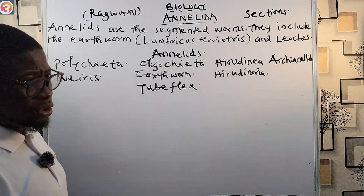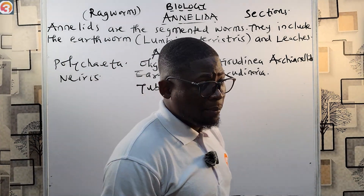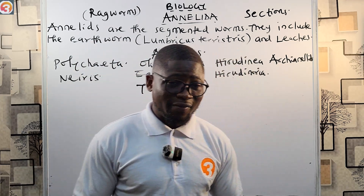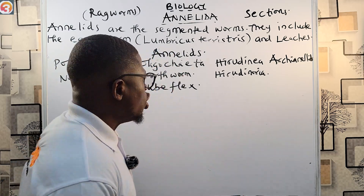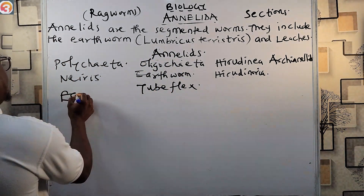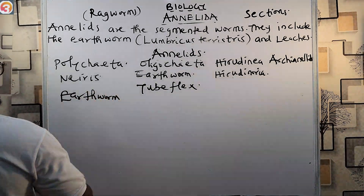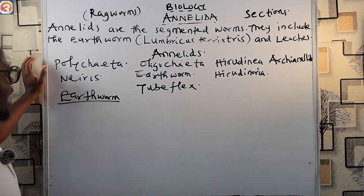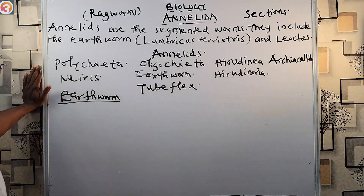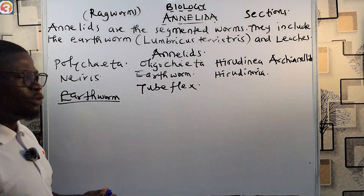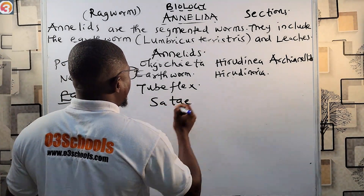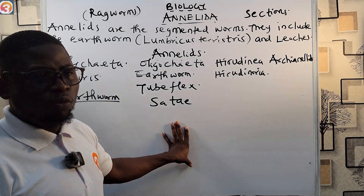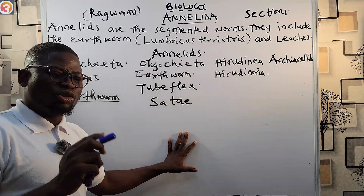Now let's look at the structure of the earthworm, the most popular of the annelids. The earthworm has special muscles and bristles called setae that enable it to move from one place to another through the soil.